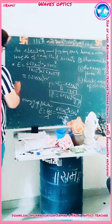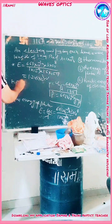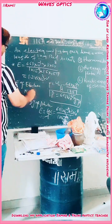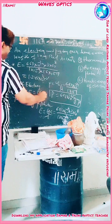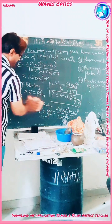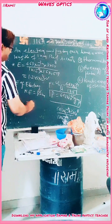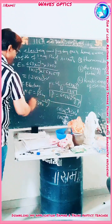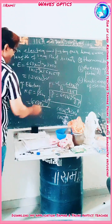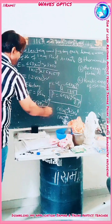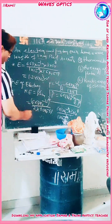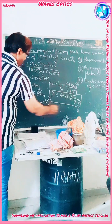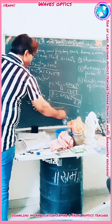Now we calculate the kinetic energy of the electron using KE = p²/2m. Substituting p = 6.63 × 10⁻²⁵ squared, divided by 2 times the electron mass 9.1 × 10⁻³¹. The result in joules is then divided by 1.6 × 10⁻¹⁹ to convert to electron volts.